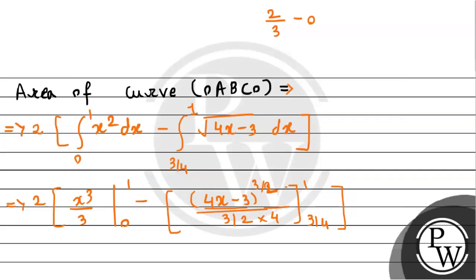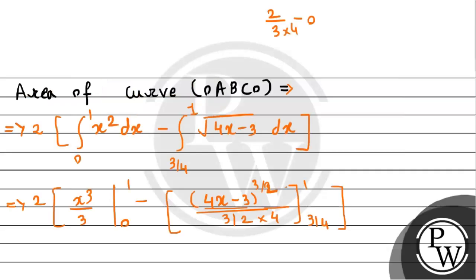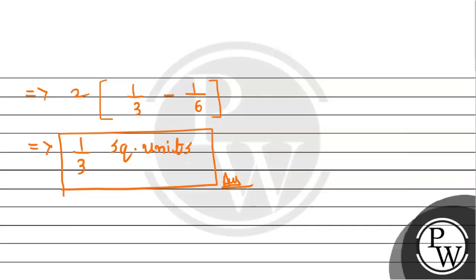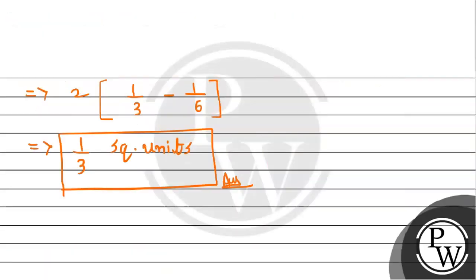We also have the multiplication factor of 4 from the chain rule derivative of the inside function 4x - 3. After simplification, we get 1/3 square units as the required area. Therefore, the area bounded by the three curves is 1/3 square units. I hope you understand. Best of luck. Thank you.